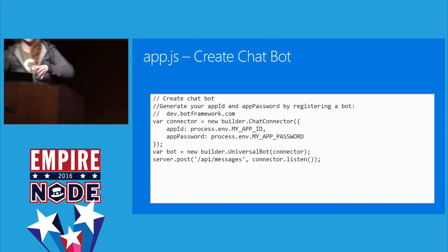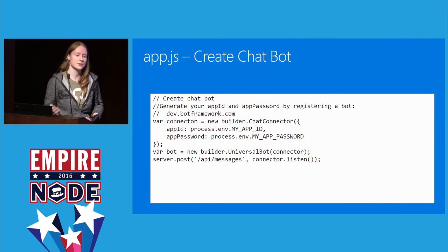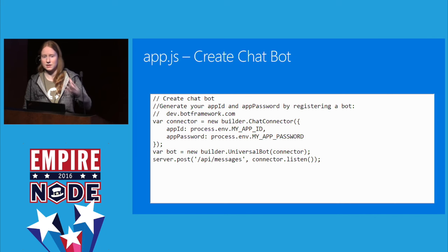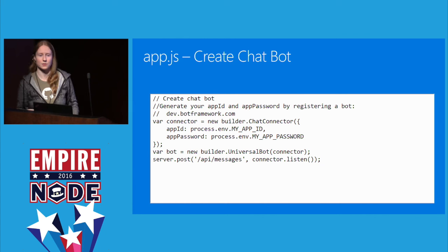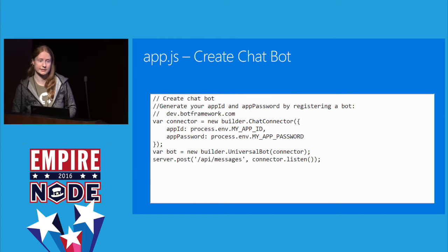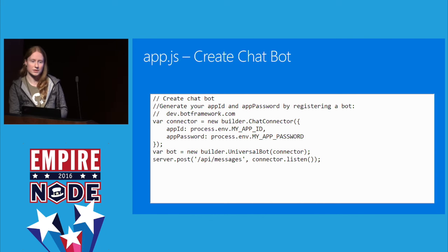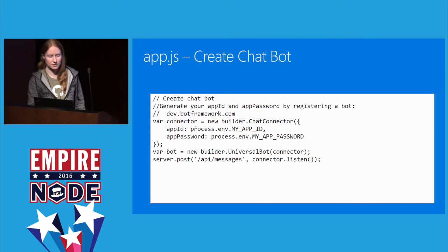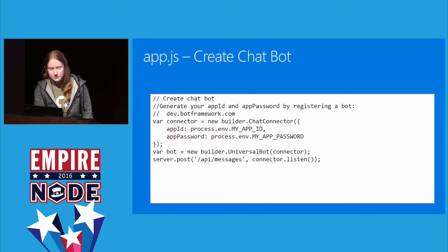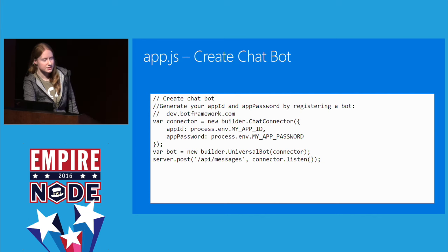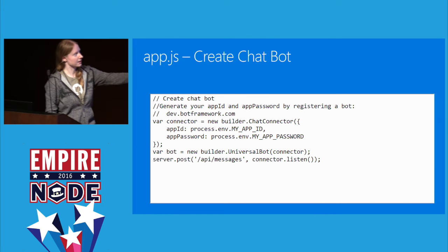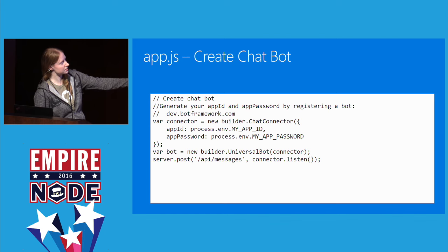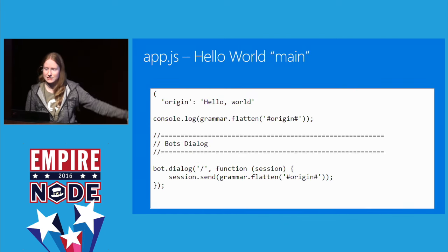You use Microsoft's bot framework developer portal to generate your app ID and your app password when you register a bot. You give it a name, think about what kind of icon or logo you want it to have. Maybe it's a sandwich ordering bot, a pizza ordering bot, or something for scheduling haircut appointments, booking a hotel, or other cool things embedded in an online website. It gives you an app password and an app ID, and you want to save those somewhere secret as environment variables.